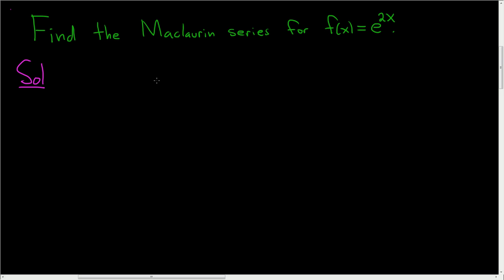We'll start by writing down the Maclaurin series for e to the x. So e to the x is equal to the infinite sum, as n runs from 0 to infinity, of x to the n over n factorial.